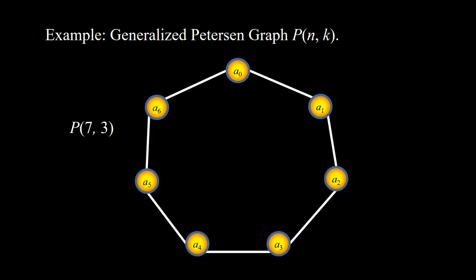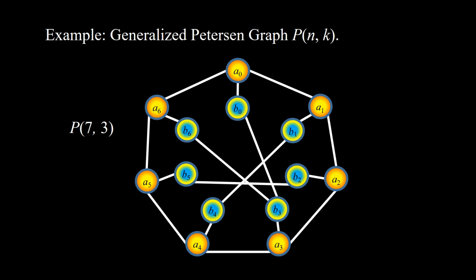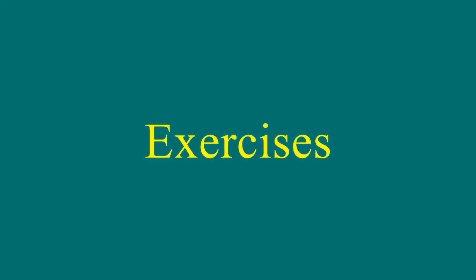Finally, we construct P(7,3). The cycle C7 and B vertices, and the AB edges. Because K is 3: B0–B3, B1–B4, B2–B5, B3–B6, B4–B0, B5–B1, and B6–B2.